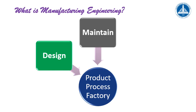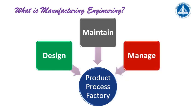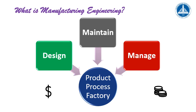We maintain the process, the machinery which carries out this process, and of course maintain the whole factory. We also manage the product design phase, we manage the processes, we manage the whole factory — factory managers are manufacturing engineers. So these are the three main components of what manufacturing engineers do in their life: they design, they maintain, and they manage.